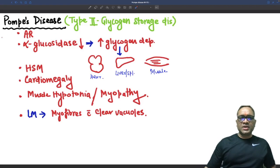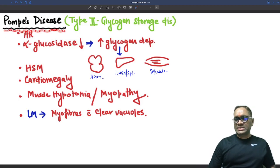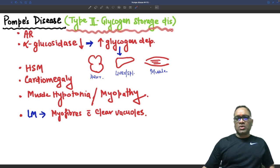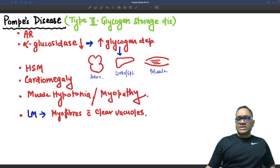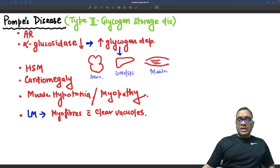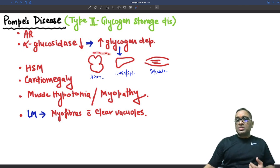Hello everyone. In this high-yielding short, I am going to tell you about Pompe disease, which is a type 2 glycogen storage disorder. It is an autosomal recessive disorder where the alpha-glucosidase enzyme will be deficient, and because of that deficiency, glycogen will be deposited.